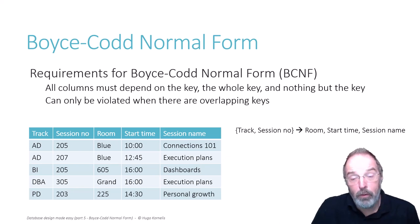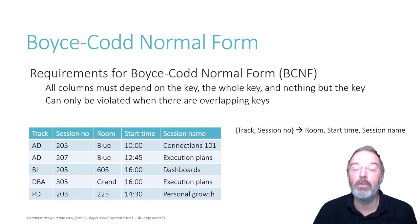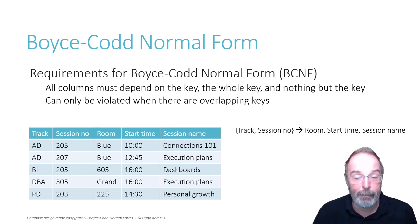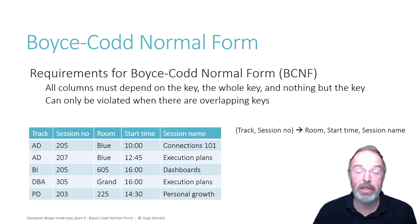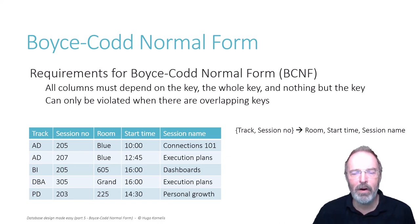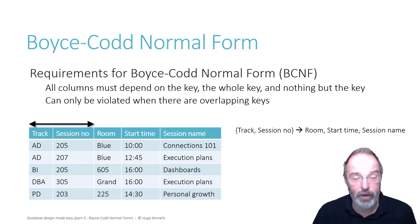Every session can of course start at only one time, take place in only one room, and it should only have a single name. Because track and session number combined determine room, start time, and session name, we now have a combination of columns that determine every other column in the table. That is a candidate key. So track and session number is a candidate key.